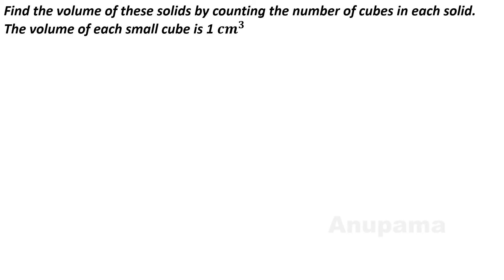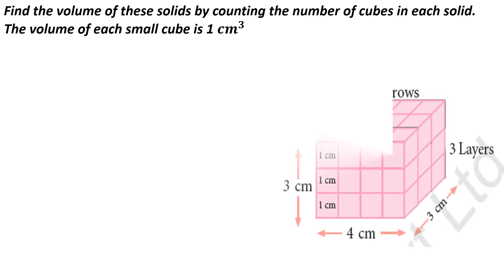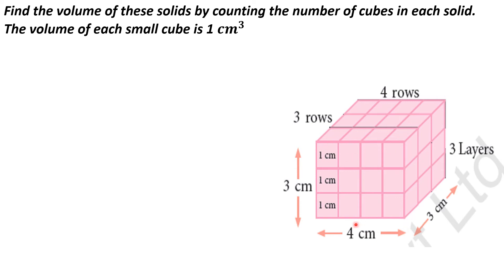Let us find the volume of one more figure — a cuboid. The volume of each small cube is one centimeter cube. Counting the cubes: one through twelve in the first layer, another twelve in the second layer, and another twelve in the third layer. Total cubes are 36, so the volume of this cuboid is 36 centimeter cube.